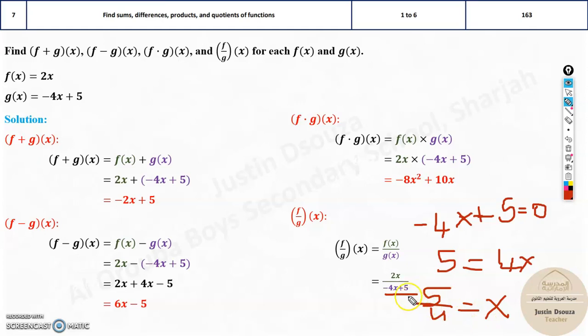So basically, when x is 5 by 4 here, this will be undefined. So avoid this term. x should never be equal to 5 by 4. Any value other than that is fine. This is how we solve this very basic, very simple problem.